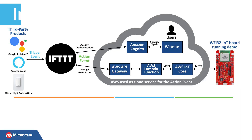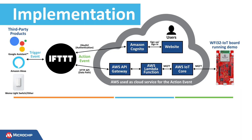This is the block diagram showing the implementation of this project. AWS Cloud is used in this demo to connect the WFI-32 IoT board and work with the IFTTT web services. You can use other cloud services if you wish.